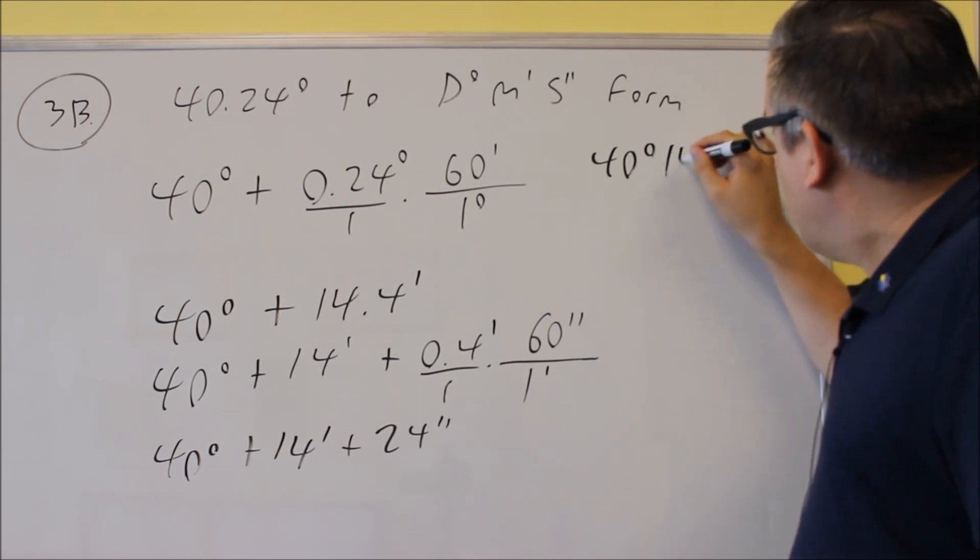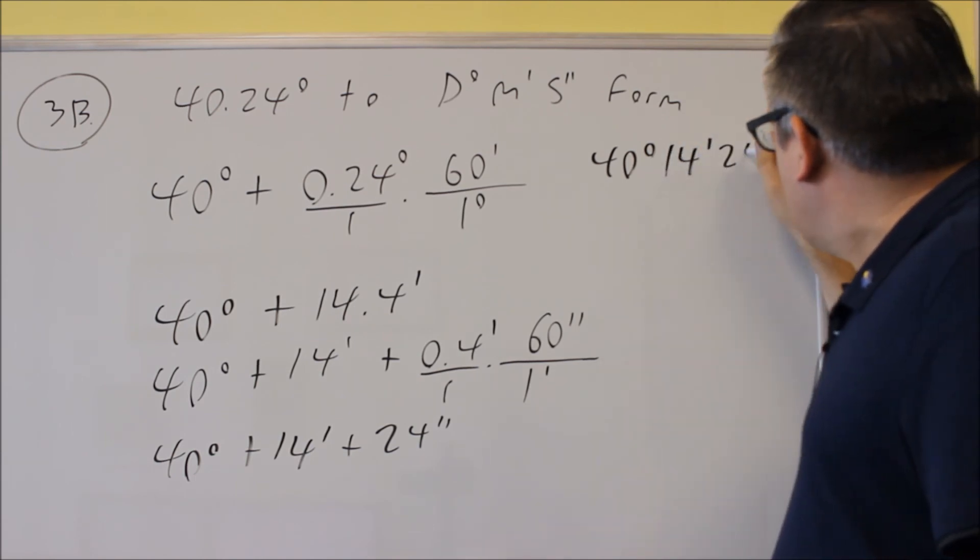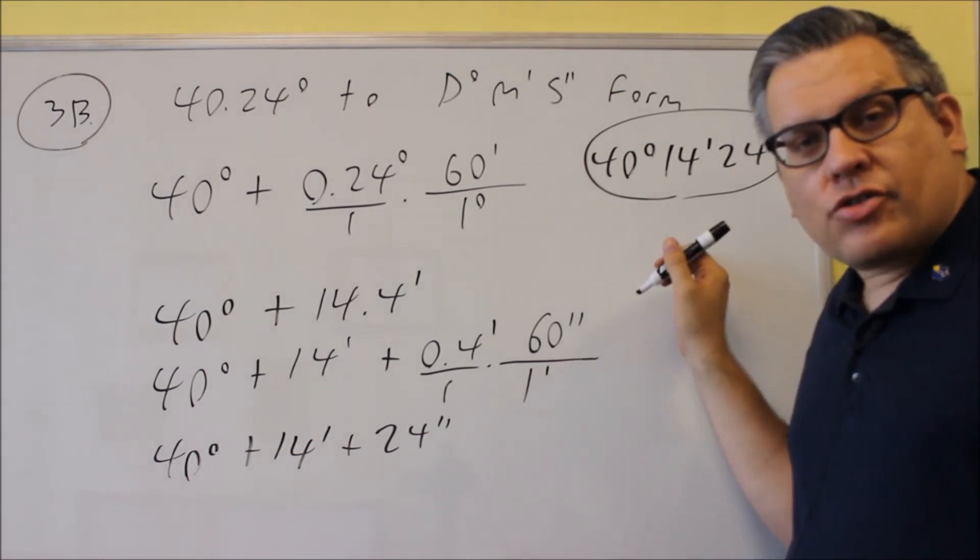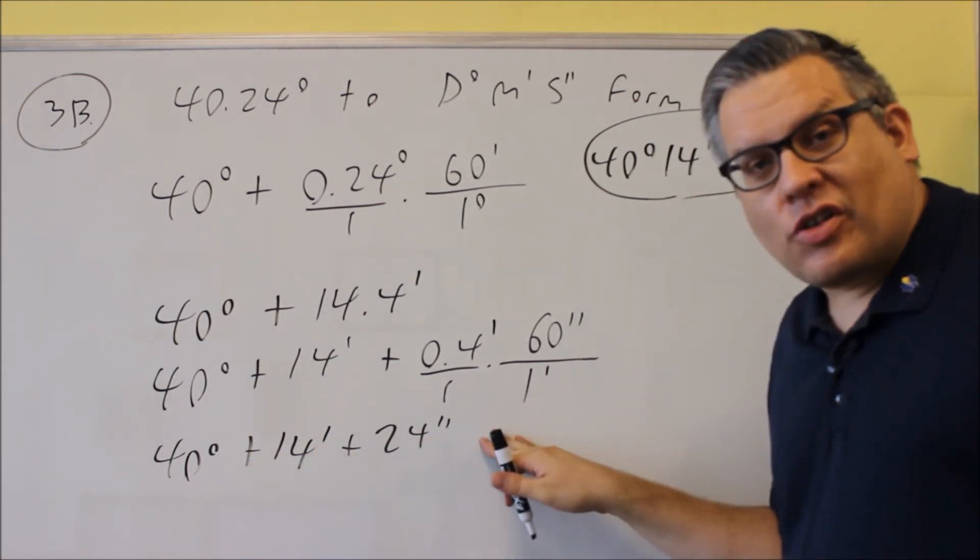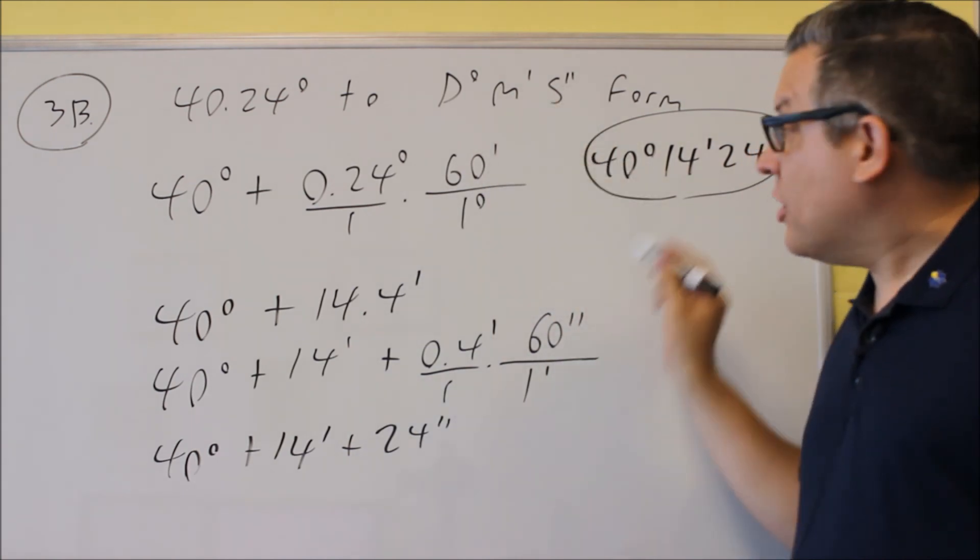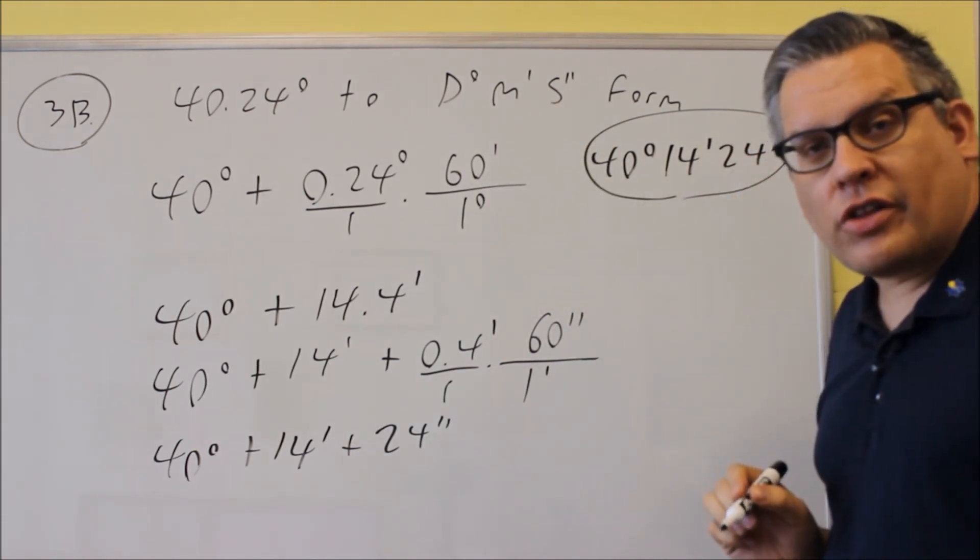40 degrees, 14 minutes, 24 seconds. So you would put this on your answer line. You want to put them all together. You don't want to leave your answer like this. Degrees, minutes, seconds form means that you kind of combine those all together like that.